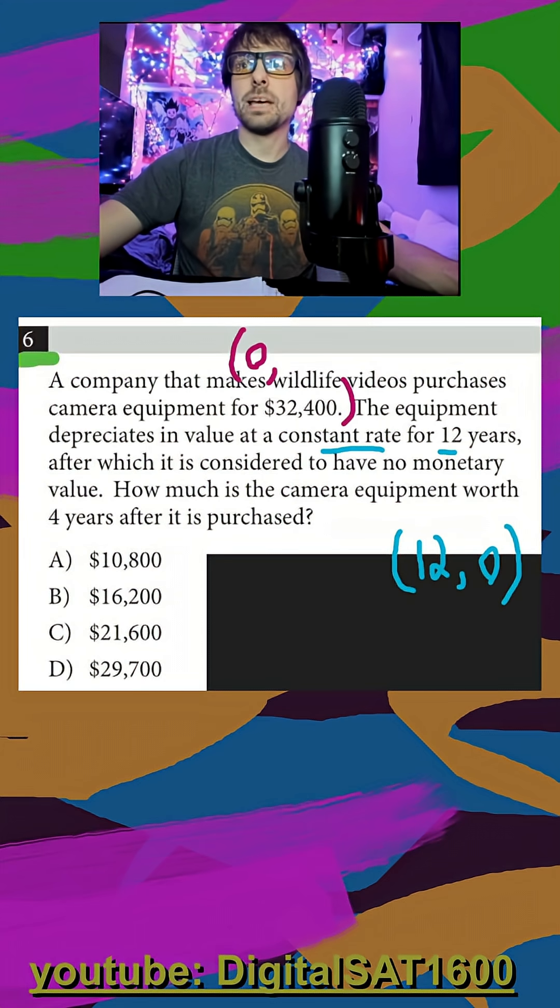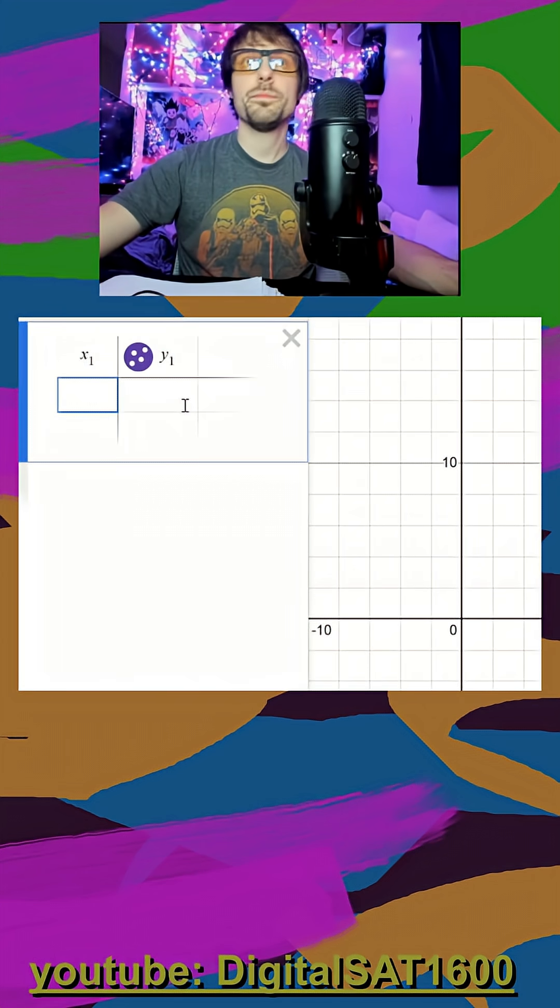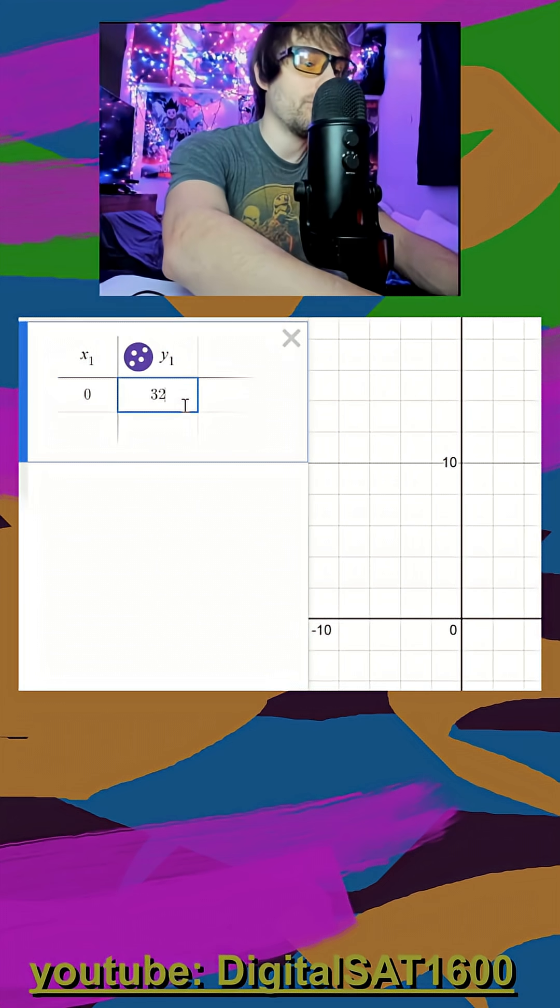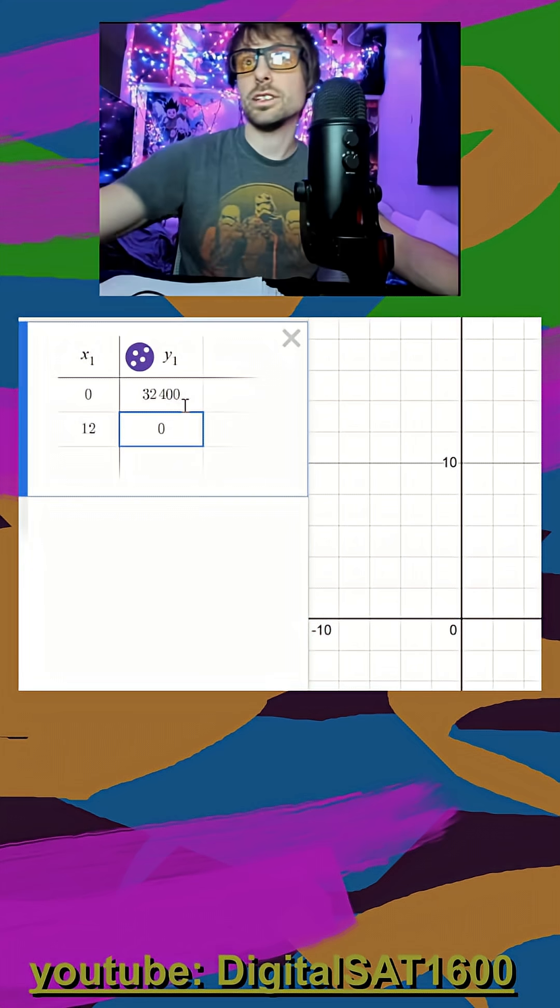Before I even take another step, I'm going to open up Desmos. I have two points, so I'm going to throw a table. My first x is 0 when my y is $32,400. My second x is 12, which leaves us with no value.